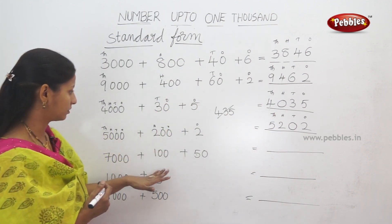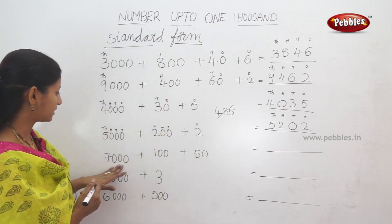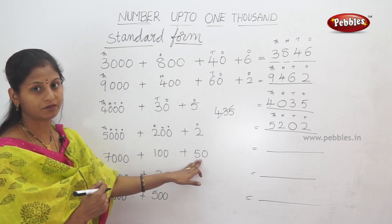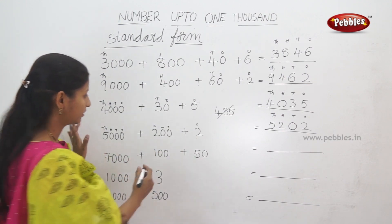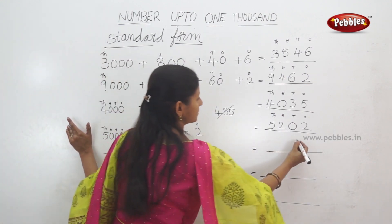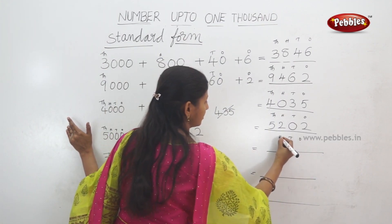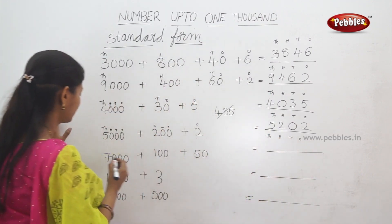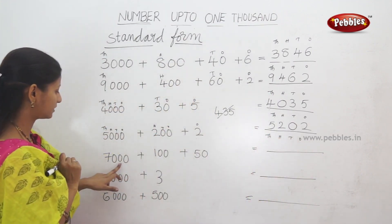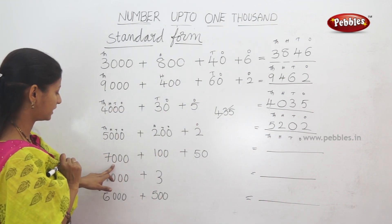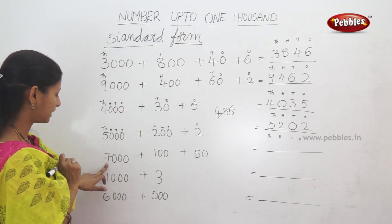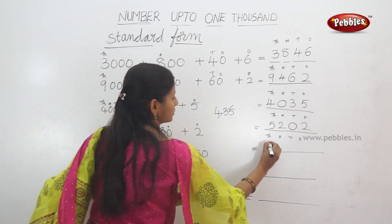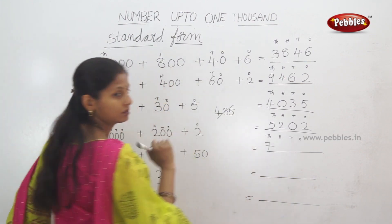Here is another example: 7000 plus 100 plus 50. We have four place values: ones, tens, hundreds, thousands. So, any thousands? Ones, tens, hundreds, thousands. Seven thousands — so, thousands position is 7.